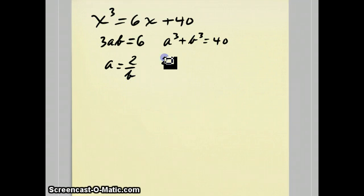Solve for a in terms of b will again end up with 2 over b. Plug that into this equation. You will get 2 over b cubed plus b cubed equals 40.